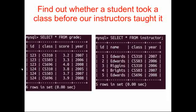Here's another example. We're going to try and find out whether a student took a class before one of our instructors taught it. Here are the grades that our students with their IDs acquired in each class, and here are the instructors and the classes that they've taught. We can see by looking at this table that one of our students took a class in 2005, but none of our instructors taught a class in 2005. We're going to try and identify who that student was and the year they took the class.